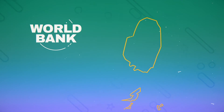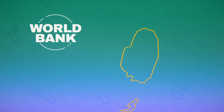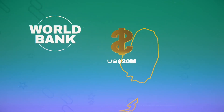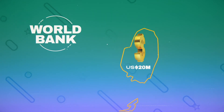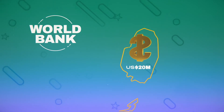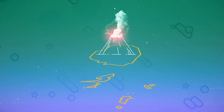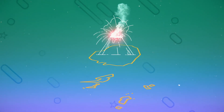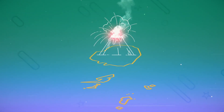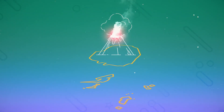Recently, the government of St. Vincent and the Grenadines received $20 million in disaster risk financing support through the World Bank's Catastrophe Deferred Drawdown Option, or CAT DDO program, to aid in their recovery from the recent eruption of the La Soufriere volcano. After the catastrophe, a contingent line of credit was triggered.